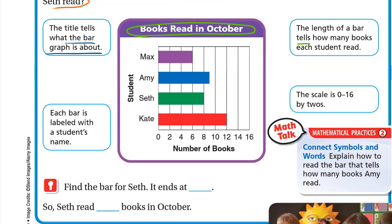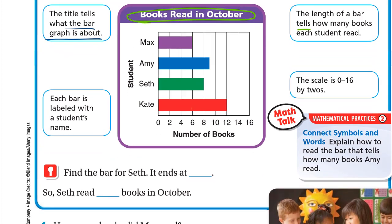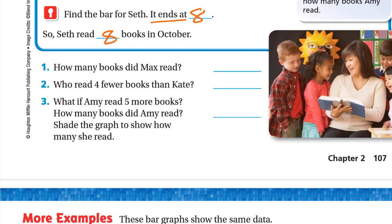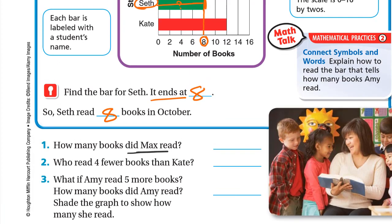Find the bar for Seth. This is Seth's bar, and it ends at 8, which means Seth read 8 books in October.